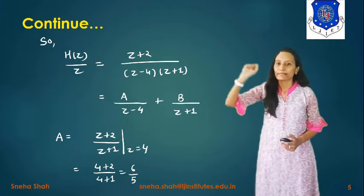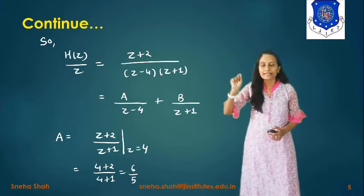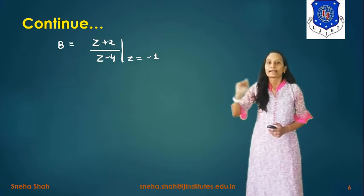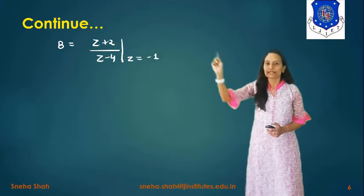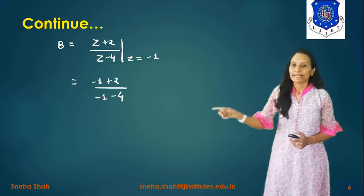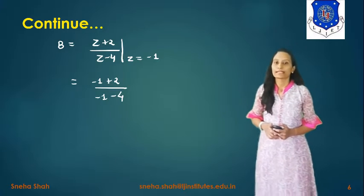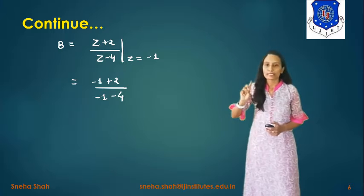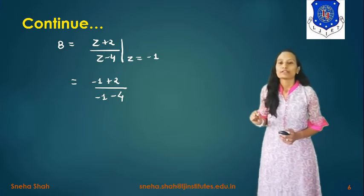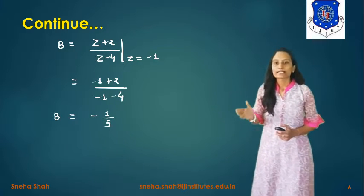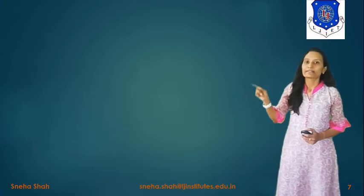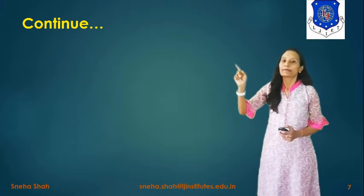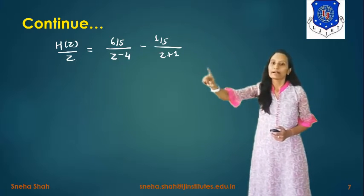To find B, we remove the (z + 1) factor and substitute z = -1: B = (z + 2)/(z - 4) at z = -1 = (-1 + 2)/(-1 - 4) = 1/(-5) = -1/5. Substituting A and B back: H(z)/z = (6/5)/(z - 4) - (1/5)/(z + 1). Multiplying both sides by z: H(z) = (6/5) · z/(z - 4) - (1/5) · z/(z + 1).